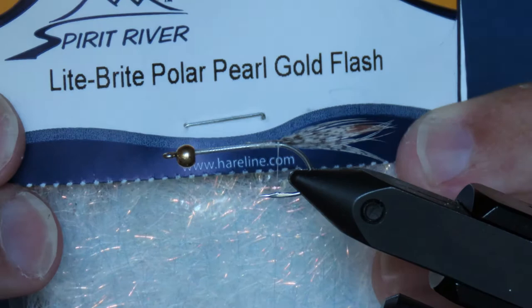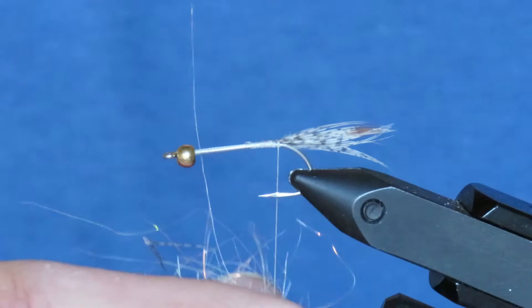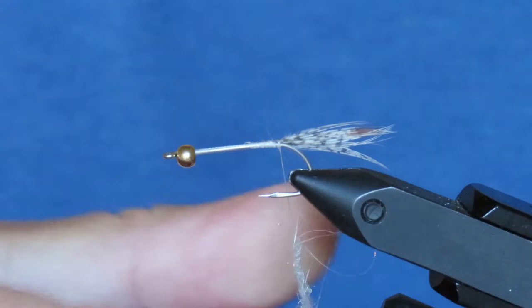I'm going to create a body with light bright dubbing, and the one I like to use is this polar pearl, which has a little bit of gold mixed in. Light bright is not the easiest of materials to apply, but if you're patient and take your time, it'll usually all come out right in the end.